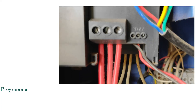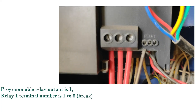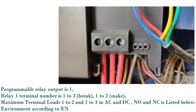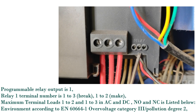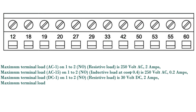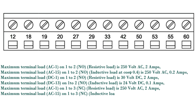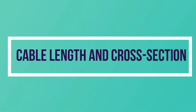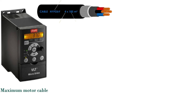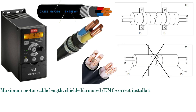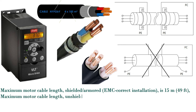Relay output: programmable relay output is 1. Relay 1 terminal numbers are 1 to 3 (break) and 1 to 2 (make). Maximum terminal loads 1-2 and 1-3 in AC and DC — NO and NC — are listed per environment according to IEC 60664-1 overvoltage category 3/pollution degree 2. Maximum motor cable length shielded/armored (EMC correct installation) is 15 meters (49 feet); maximum motor cable length unshielded/unarmored is 50 meters (164 feet).